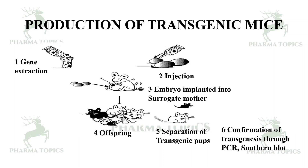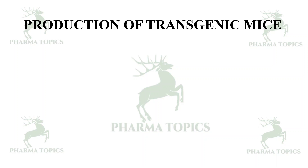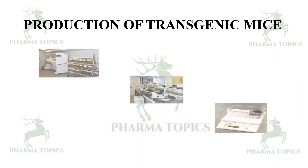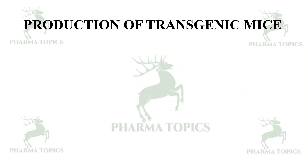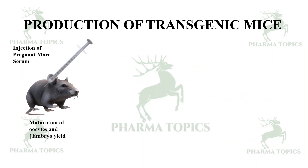For the production of transgenic mice in detail, a laminar flow cabinet and microinjection equipment are needed, and the animals must be healthy. In the first step, pregnant mare's serum gonadotropin (PMSG) is injected into the female mouse to stimulate maturation of oocytes and increase embryo yield.